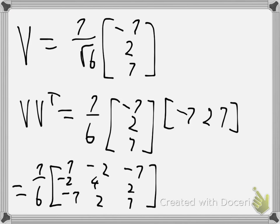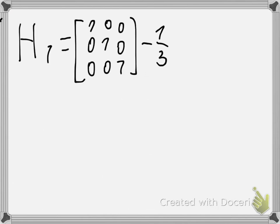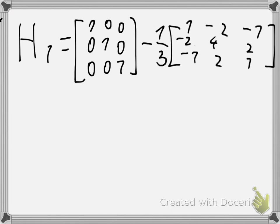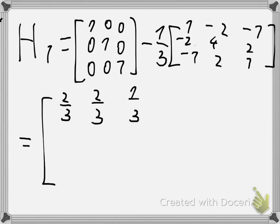So if we compute that, we will get H1 equal to the identity minus 1/3 times the outer product matrix. The entries work out to: (2/3, 2/3, 1/3), (2/3, 1/3, 2/3) — wait, let me redo: the diagonal entries include 2/3, and off-diagonal entries include 1/3, 1/3, negative 1/3, negative 2/3.